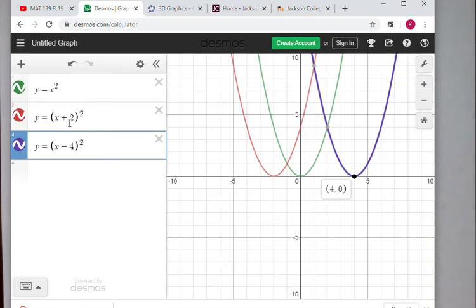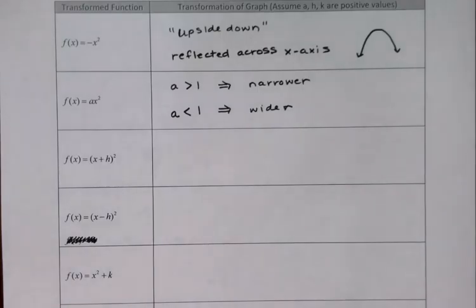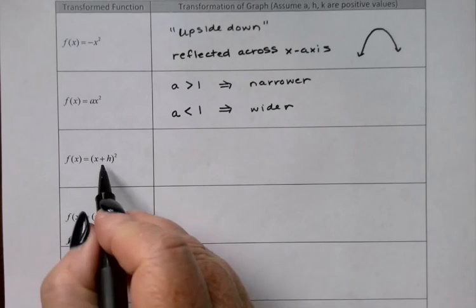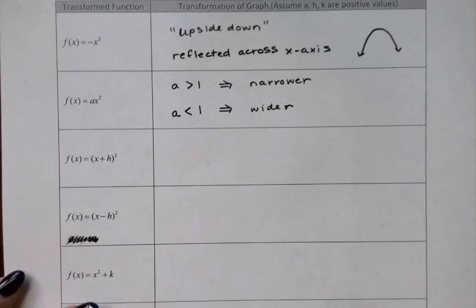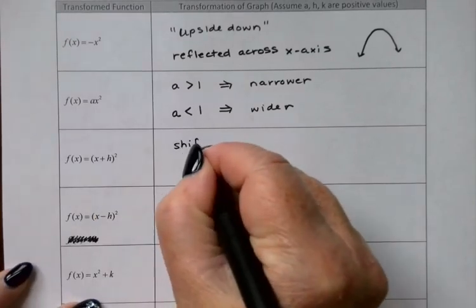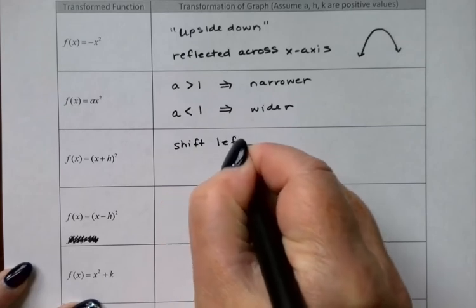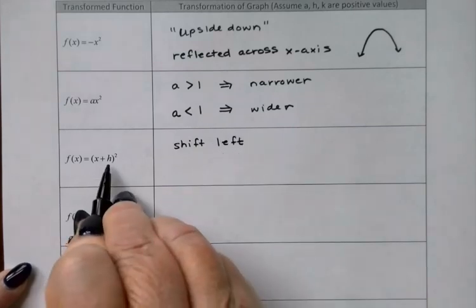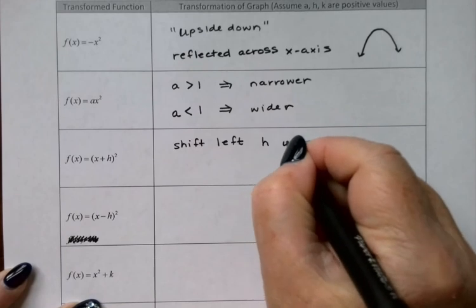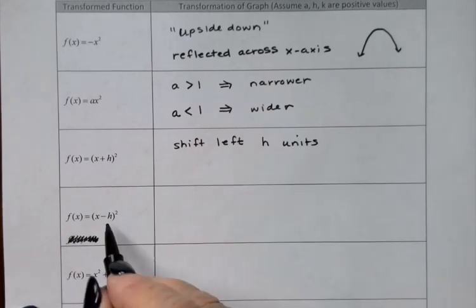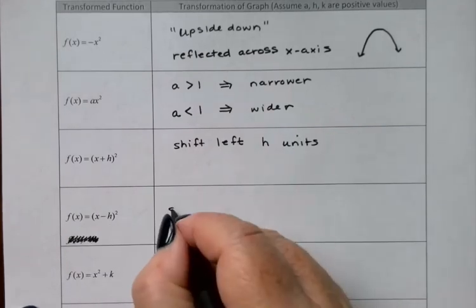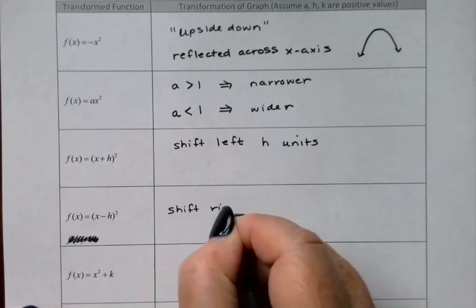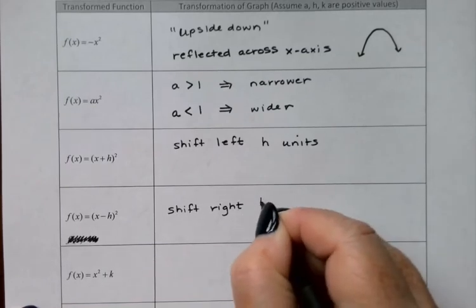So, when I added something inside the parentheses, the parabola moved left. When I subtracted, it moved right. When I add inside the parentheses, we shift to the left by however many units that number told us, so h units. And when I subtracted, we shifted to the right h units.